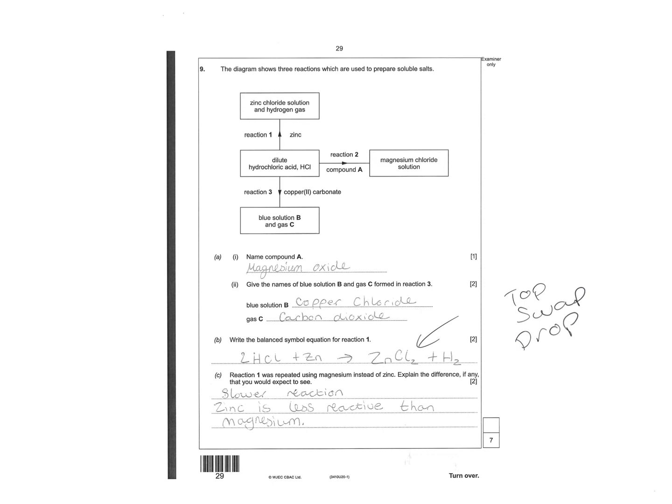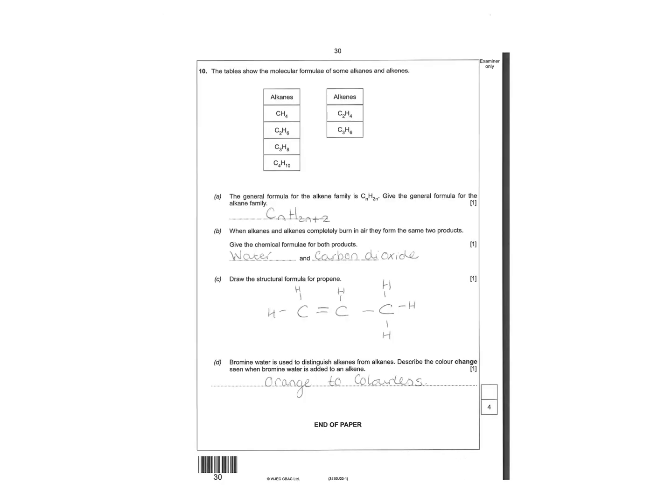Reaction one was repeated using magnesium. Explain the difference if any you would expect to see - slower reaction, zinc is less reactive than magnesium. What is the general formula for the alkane family - CnH2n+2. Give the chemical formula for both products. Chemical formula then would be H2O, CO2. Completely burned means combust.